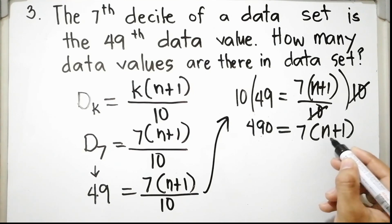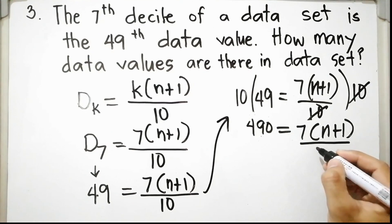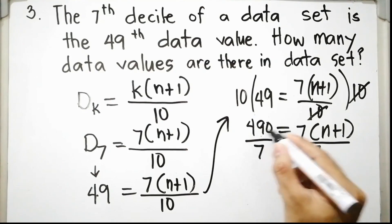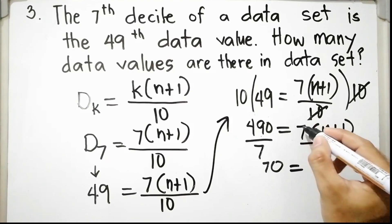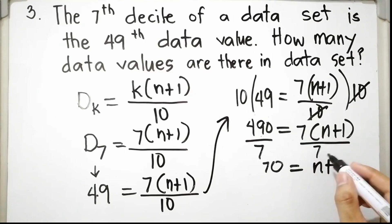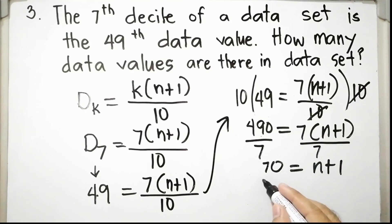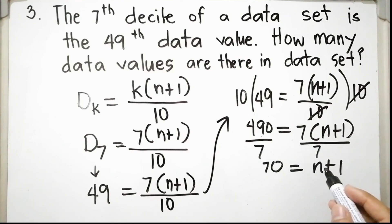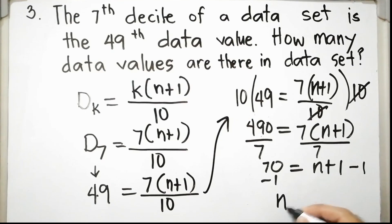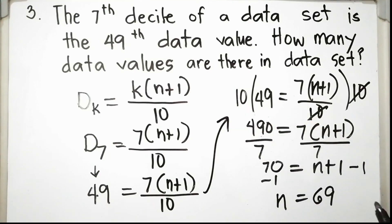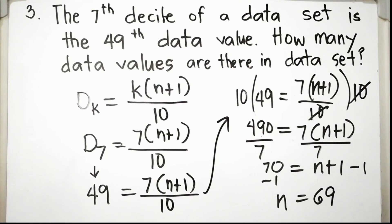Divide both sides by 7 to isolate (n + 1): 490 / 7 = 70, so 70 = n + 1. This is a linear equation in one variable. Subtract 1 from both sides: n = 69. Therefore there are 69 data values in the data set.